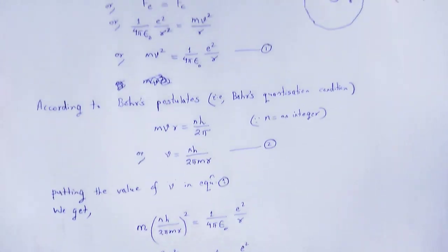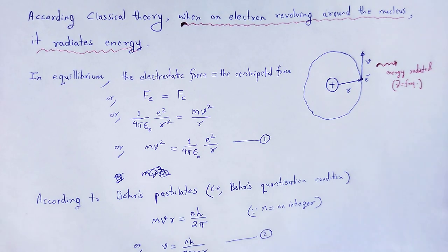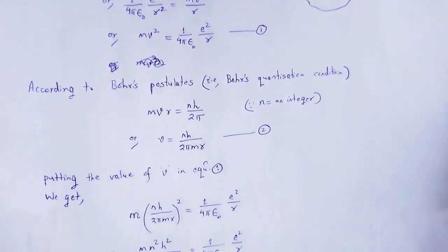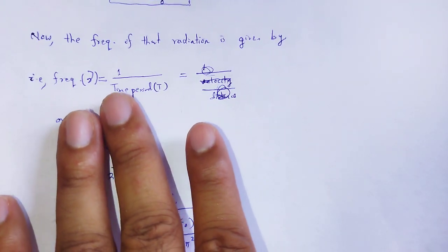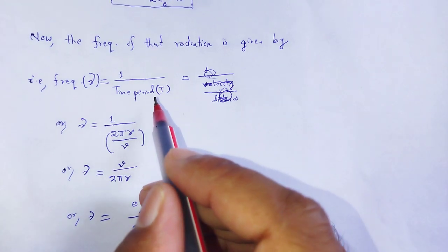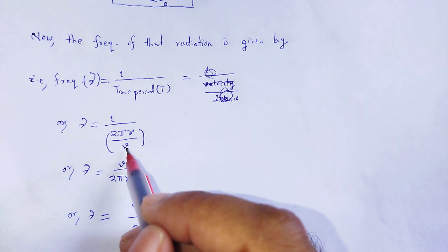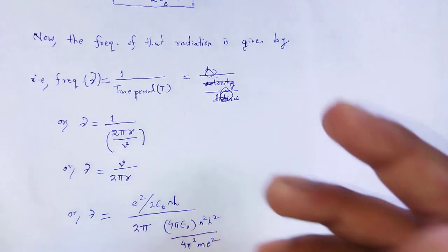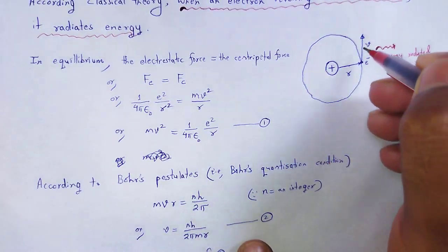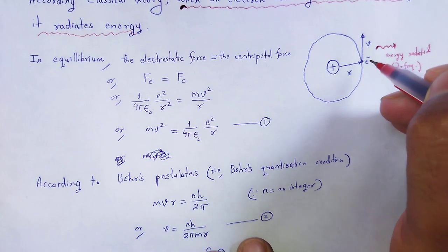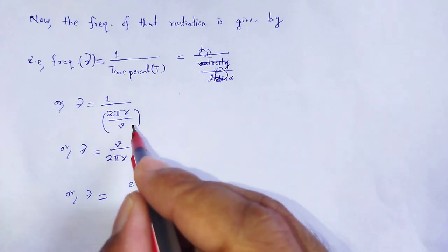Our aim is to calculate the frequency of such radiated energy. The frequency of that radiation is given by frequency equals the reciprocal of the time period, and that time period equals displacement divided by velocity. Here, the displacement is equal to 2πR — the distance covered by the electron is the circumference of the circle, which is 2πR.